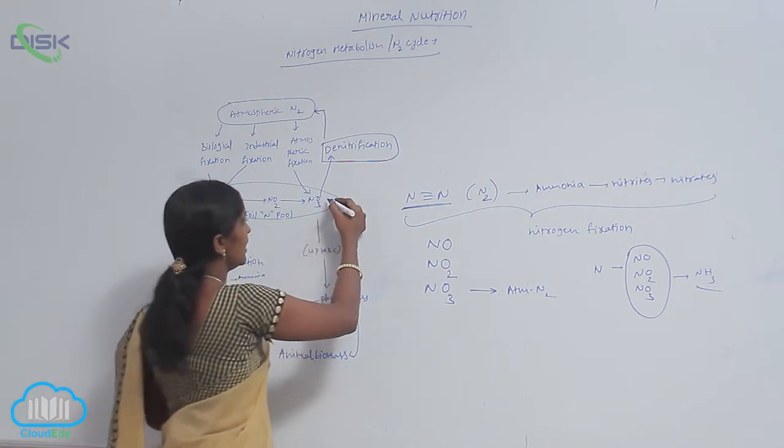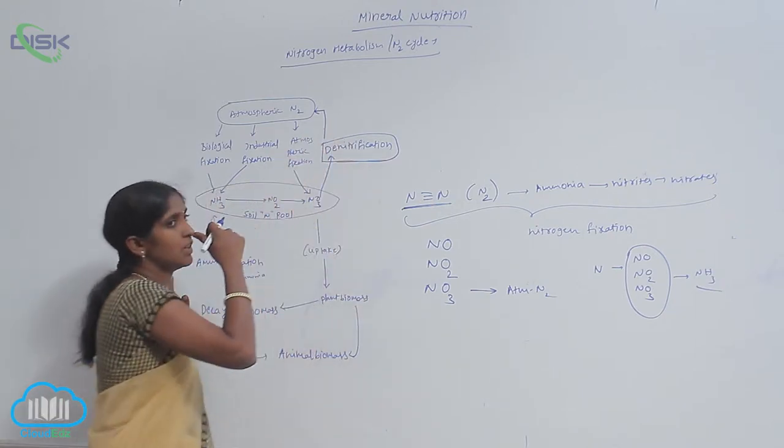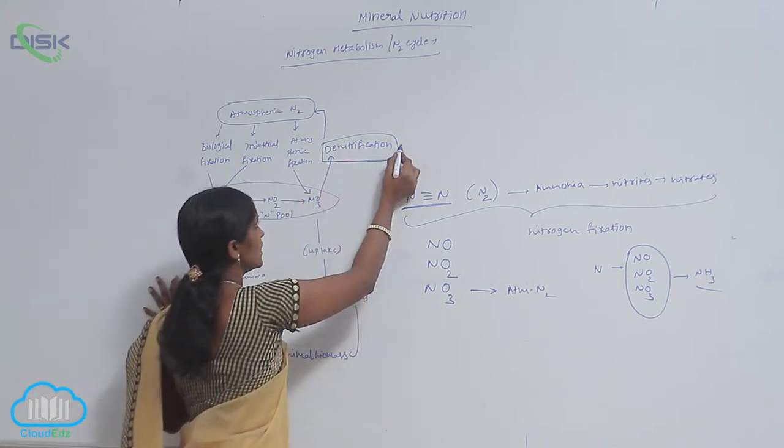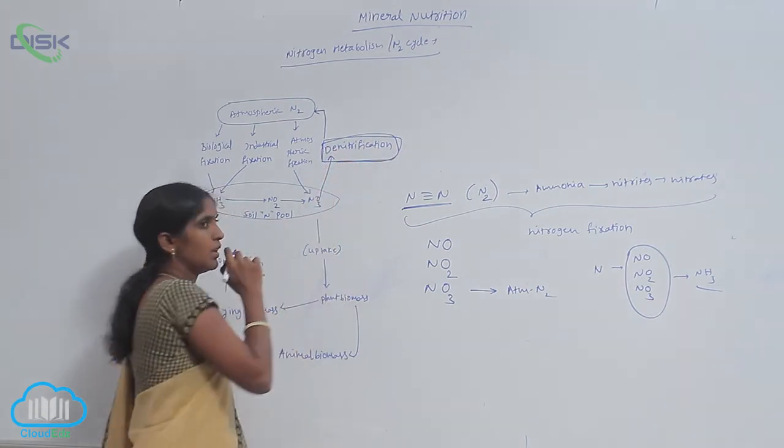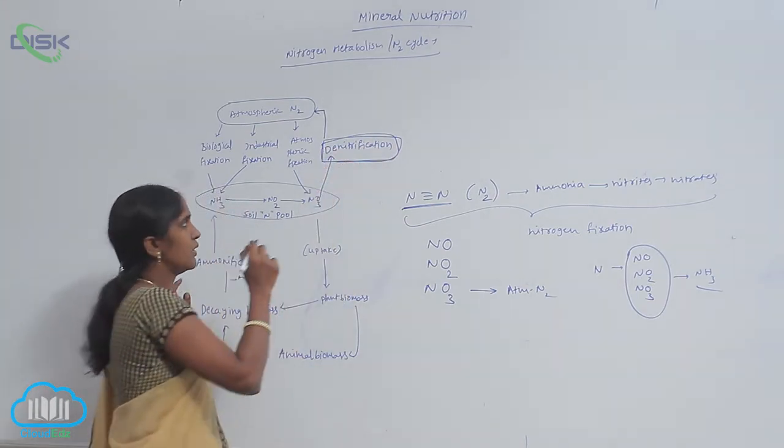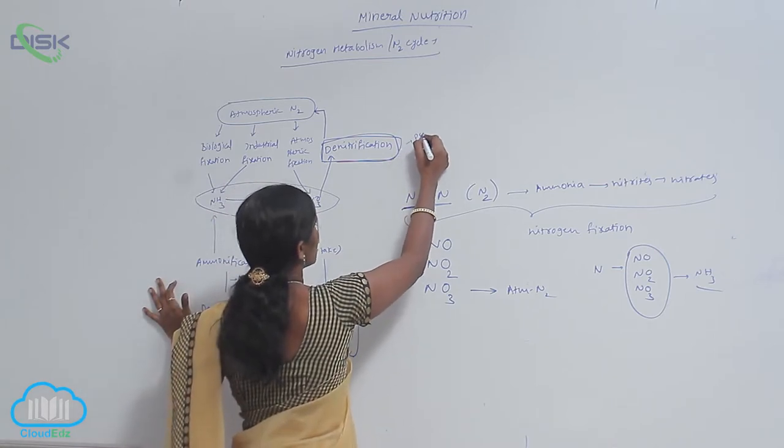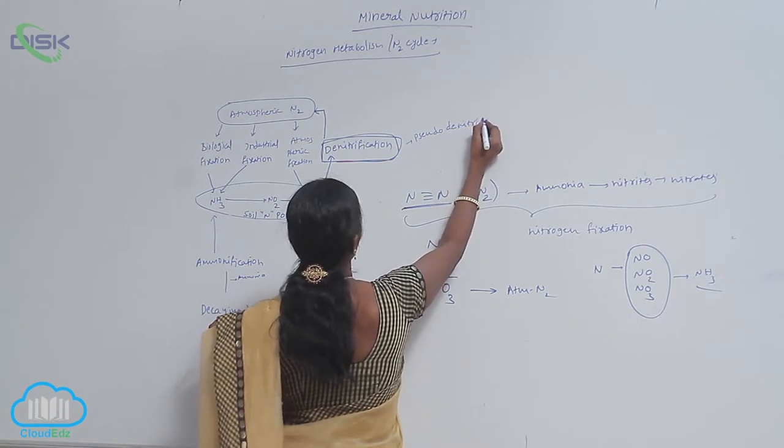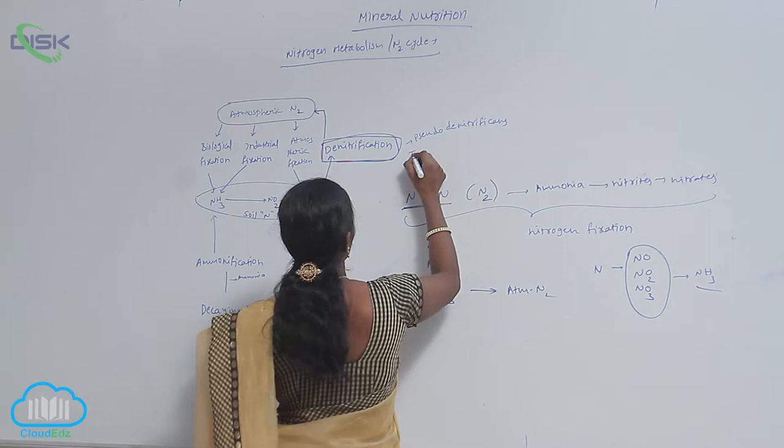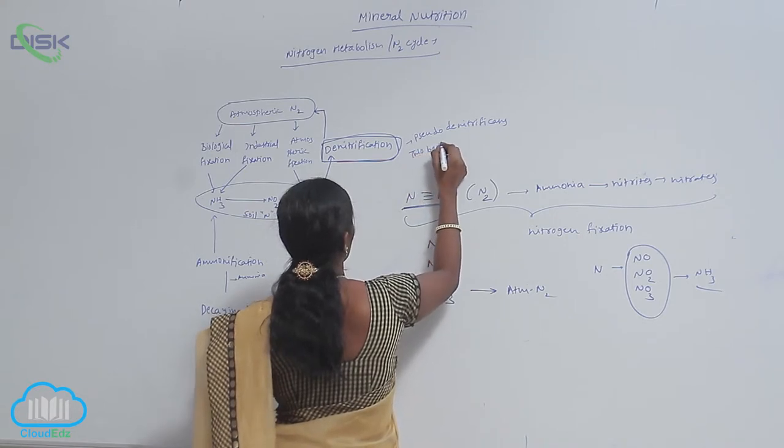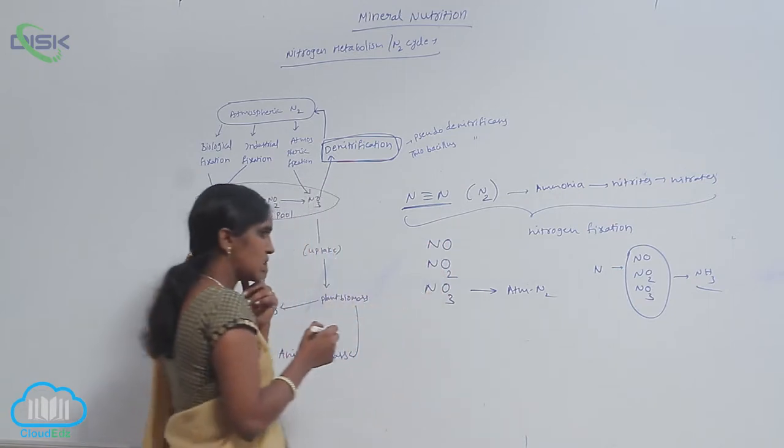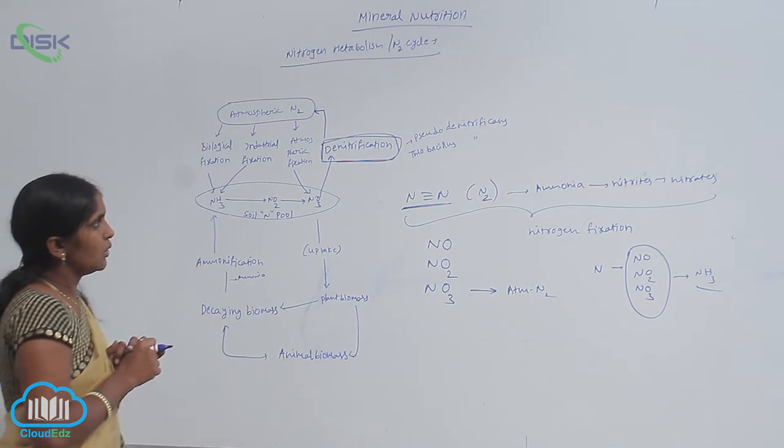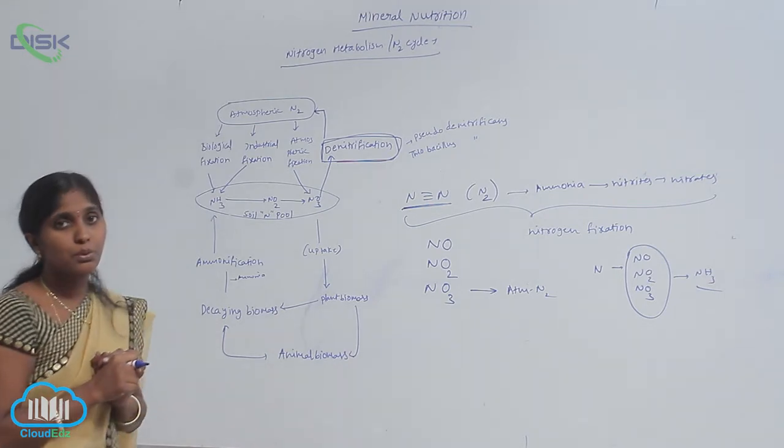But here, the nitrates are converted into atmospheric nitrogen. This process is called denitrification and is mediated by microbes such as Pseudomonas denitrificans and Thiobacillus denitrificans. These two microorganisms can carry out the denitrification process.